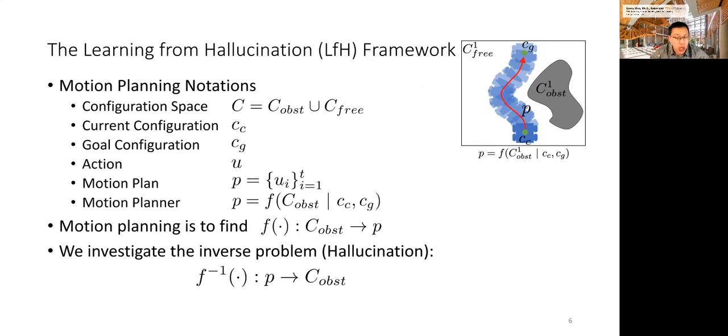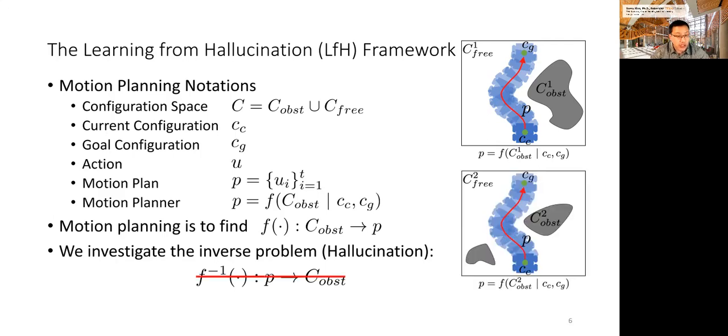In this LFH work, we propose to investigate the inverse function of F. So given an optimal plan P, what is the obstacle configuration C-obstacle? Our key observation is that finding the optimal motion plan from a variety of obstacle configurations is difficult, but finding an appropriate obstacle configuration from an optimal motion plan is much easier. Unfortunately, this inverse function is not well defined, because multiple obstacle sets can map to the same optimal motion plan, as you can see on the right.